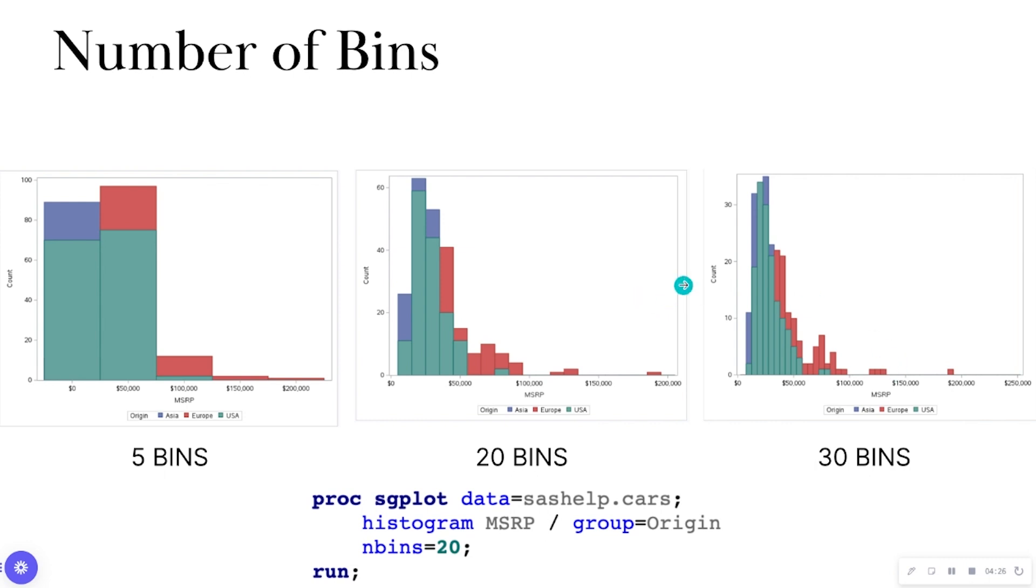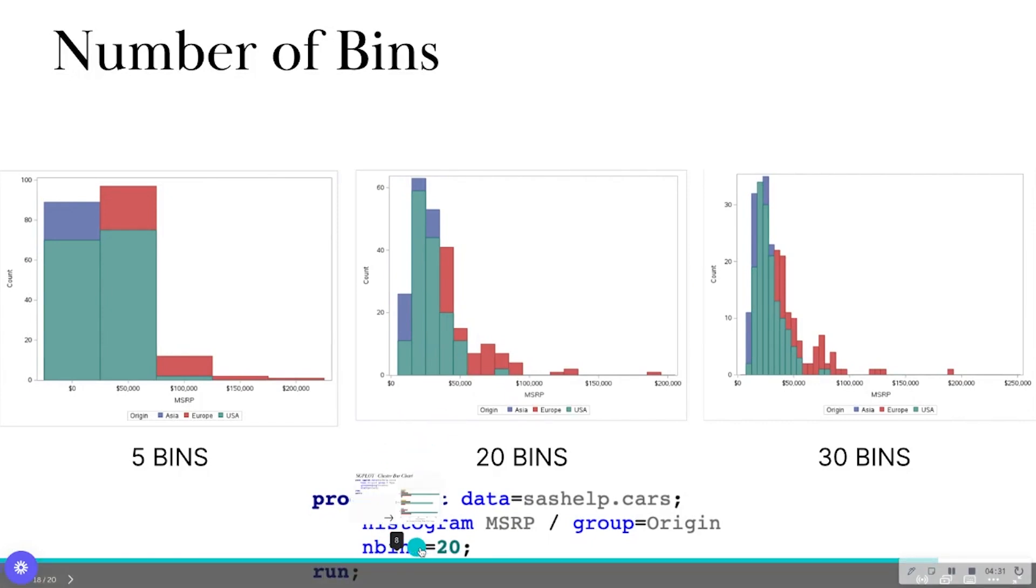If I wanted to change it to 20 bins, here's the code down here, I would do the number of bins equal to 20.